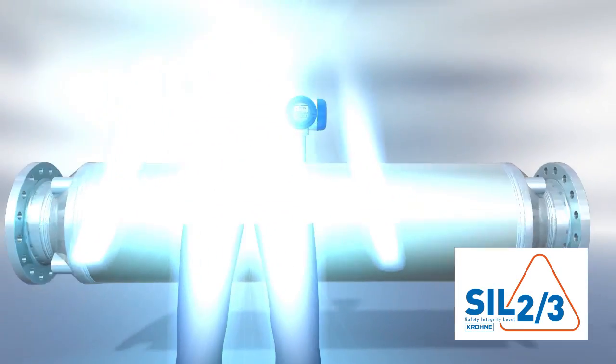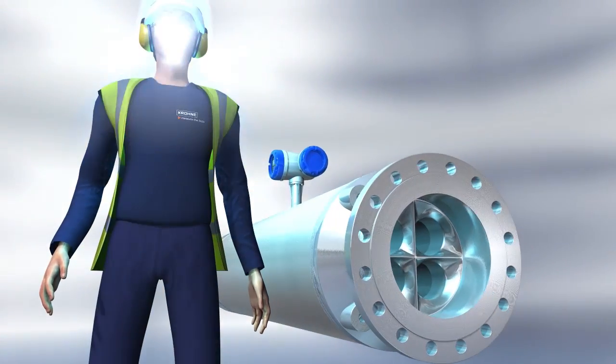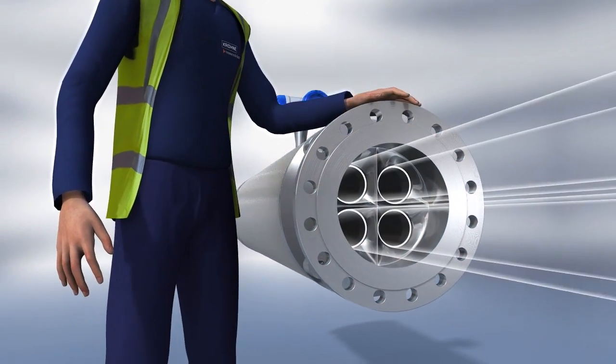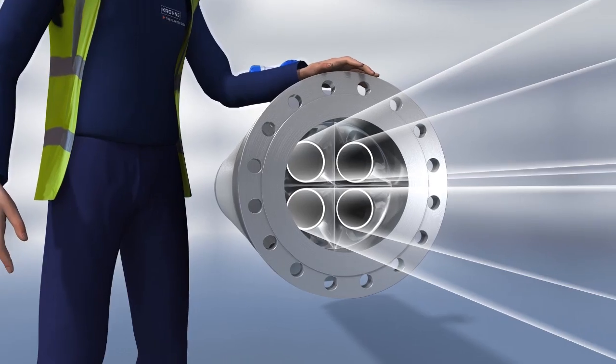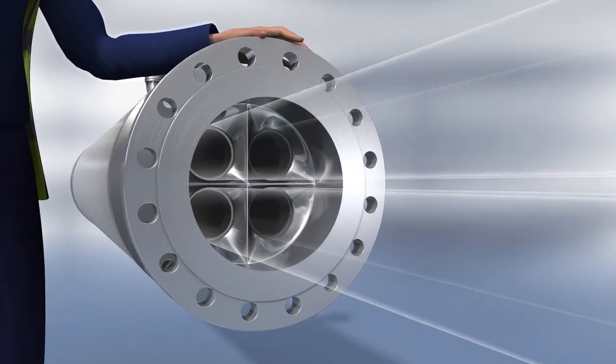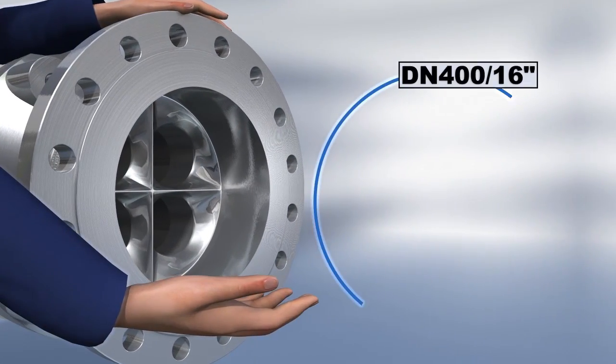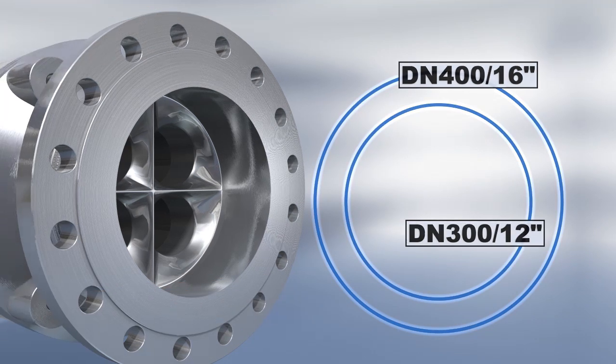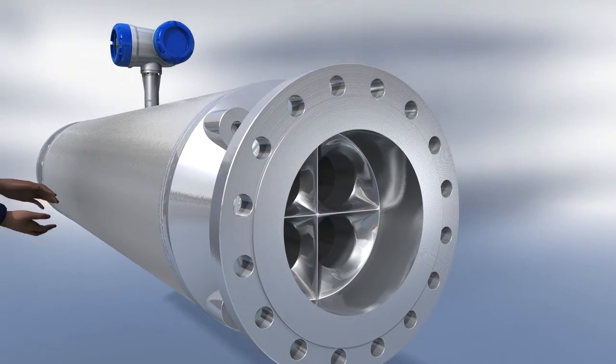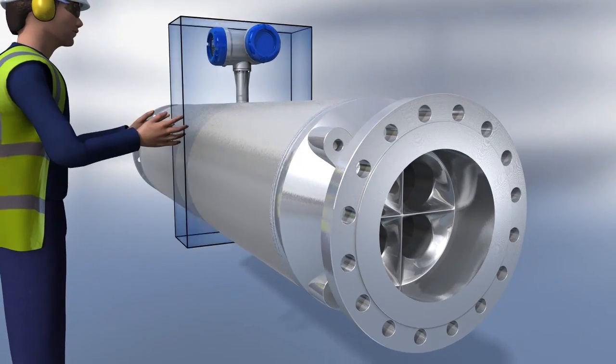Building on the great success of the twin tube design, the four straight tube OptiMass 2400 was a natural evolution. The innovative four tube design has evolved from over 30 years development experience.